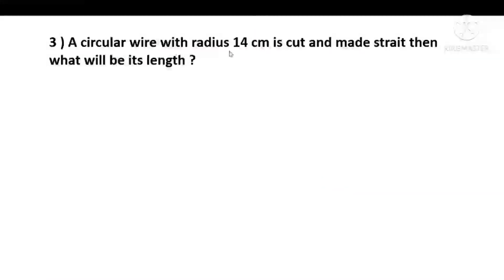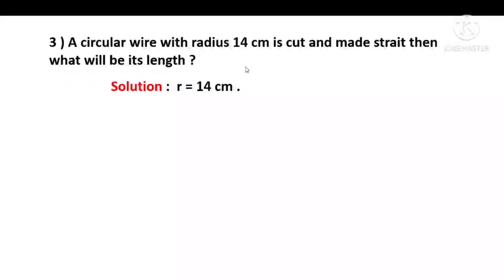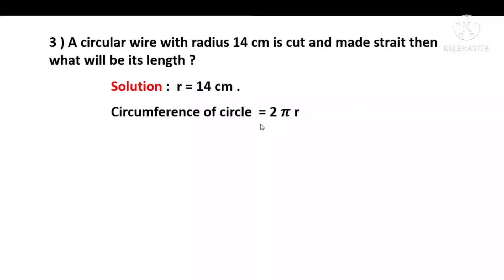Last question: a circular wire with radius 14 cm is cut and made straight. What will be its length? A circular wire in the shape of a circle has radius 14 cm. The length of the wire equals the circumference of the circle, which is equal to 2πr.